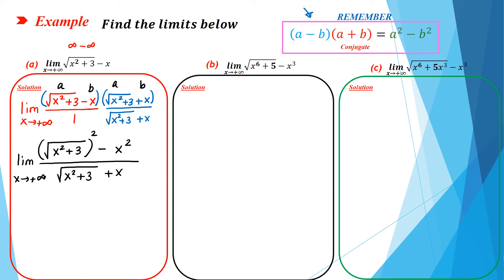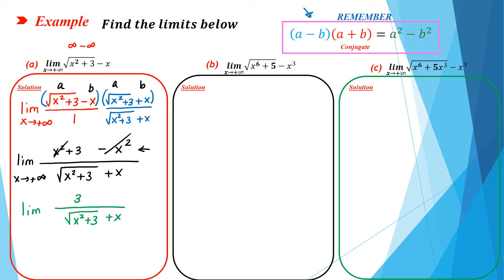Now since we have square root to the power two, you have to cancel the power two with the square root, and you will get this quantity in the numerator. Now x squared minus x squared equals zero, and we have limit of 3 divided by square root of x squared plus three plus x, when x goes to positive infinity.